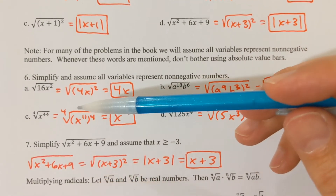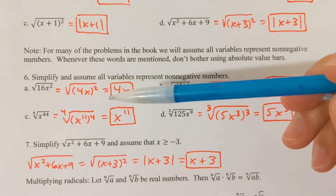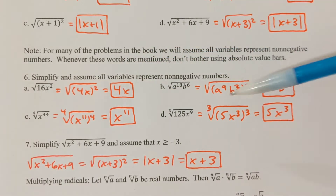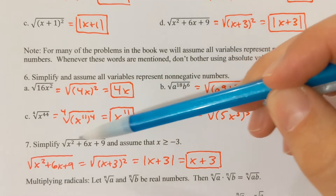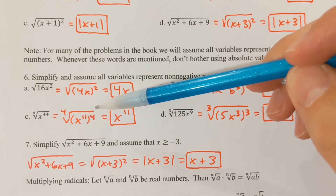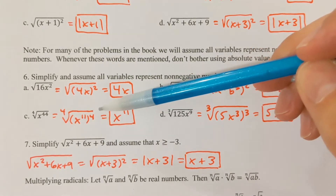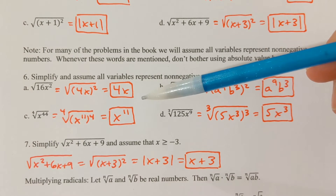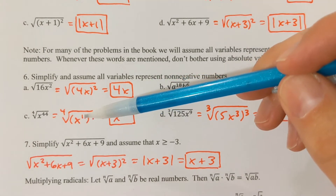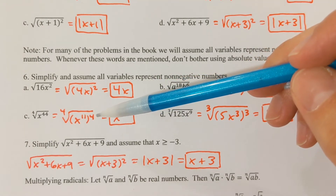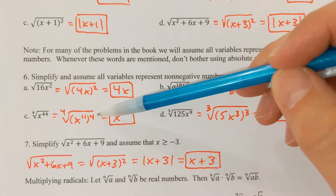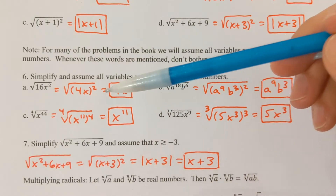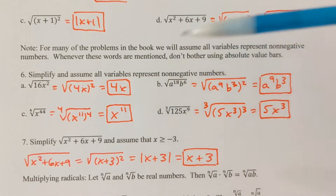Part C: the 4th root of x to the 44th. When you have a 4th root, you want to rewrite the radicand as something to the 4th power, because the index and the power will then cancel each other. x to the 11th to the 4th power would be x to the 44th. Since the index and the power of 4 match, those go away, leaving me with just x to the 11th.